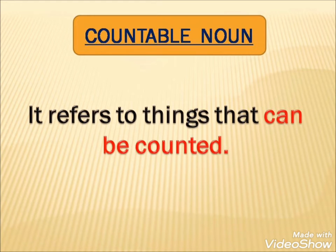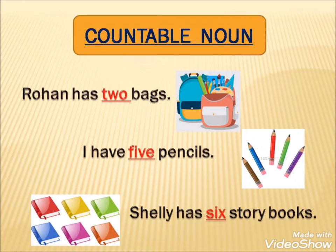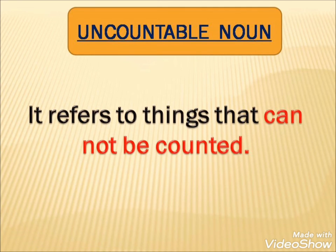Next is Countable Noun. A Countable Noun refers to things that can be counted. We can count them. Next is Uncountable Noun — it is the opposite of Countable Noun. Countable Nouns can be counted, but Uncountable Nouns cannot be counted. It refers to things that cannot be counted.